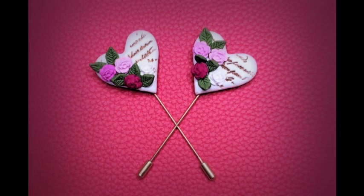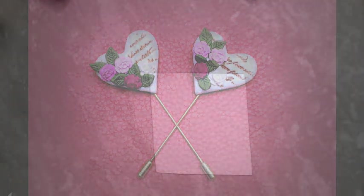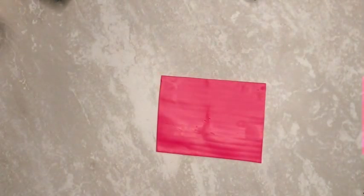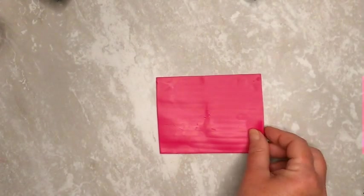Once you've gathered all your supplies we can get started. Start by rolling your white clay out to the thickest setting on your pasta machine. If you don't have a pasta machine that's about a quarter of an inch thickness. Then roll your fuchsia clay out to the same thickness.